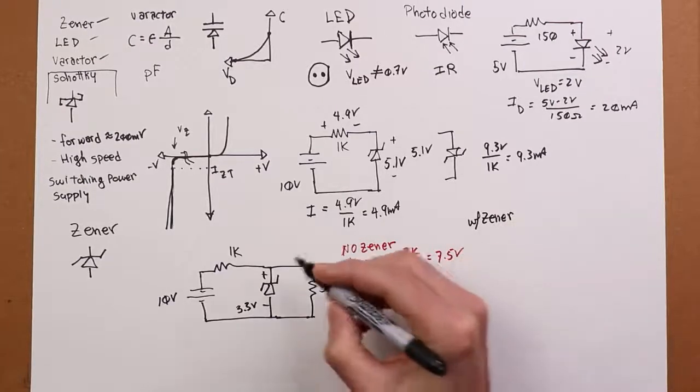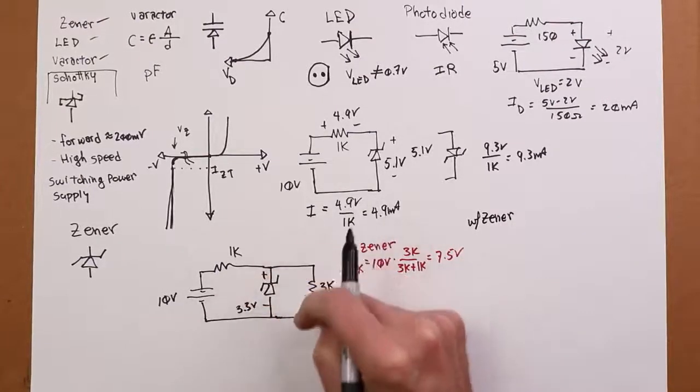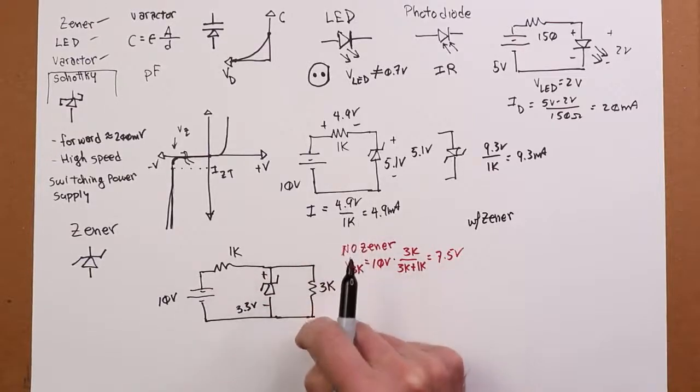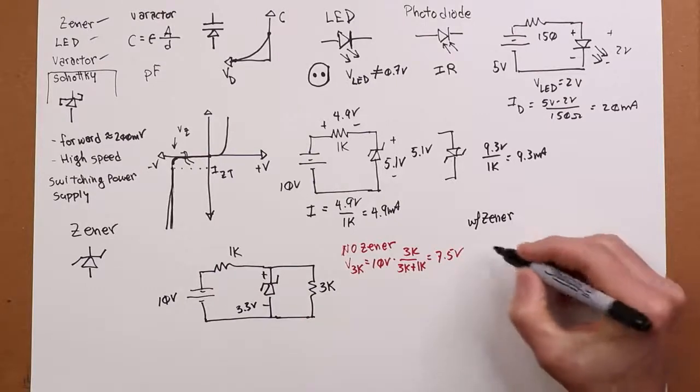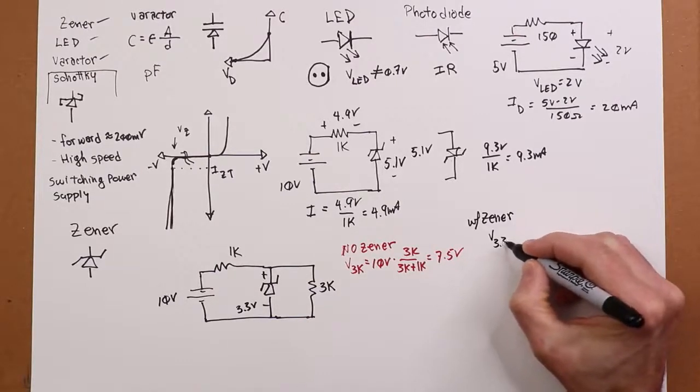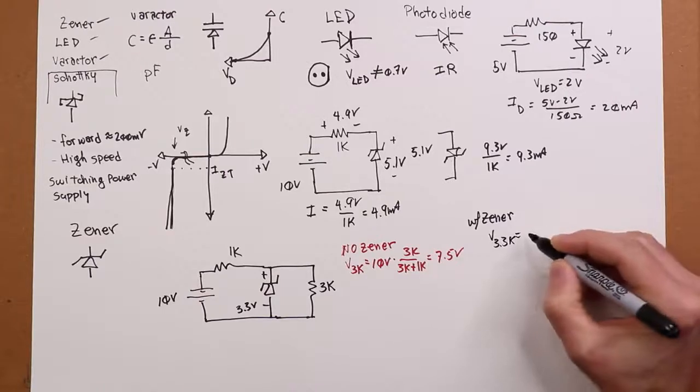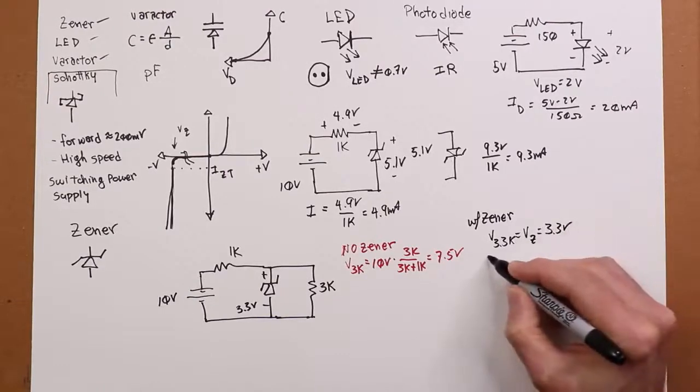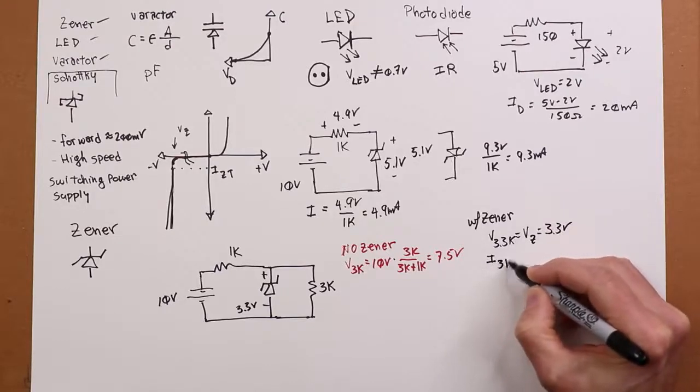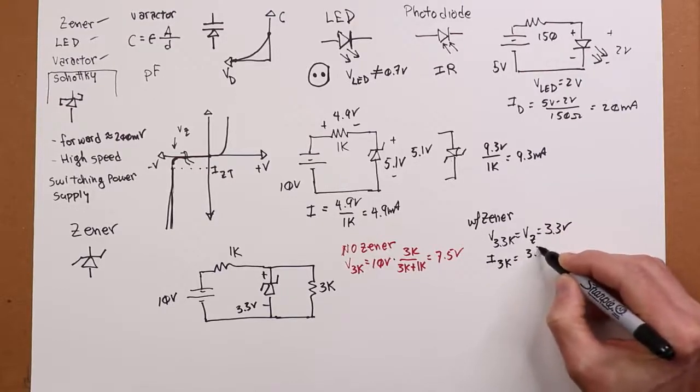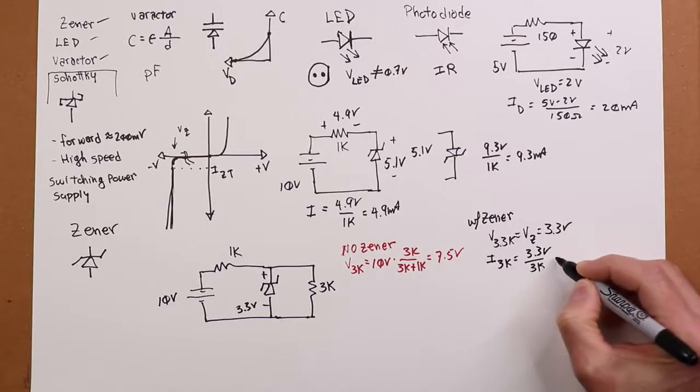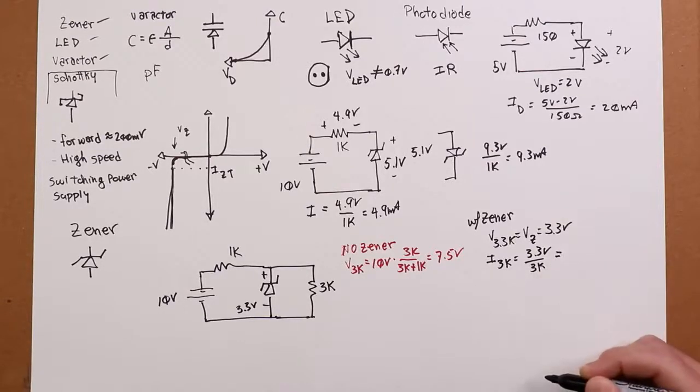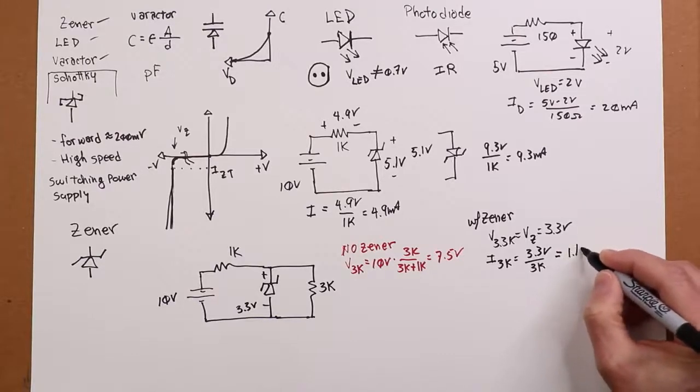Now, here's the deal. That's 3.3. These two are in parallel, so there must also be 3.3 across the 3k. So that would allow us to find the current. So the current through the 3k would be 3.3 volts divided by 3k. And that's going to work out to 1.1 milliamps.